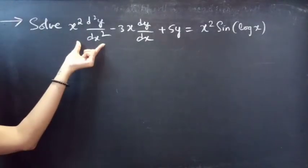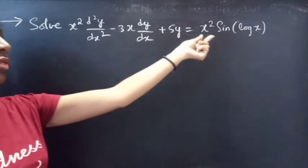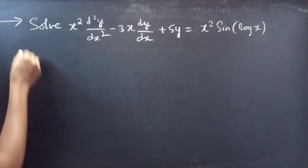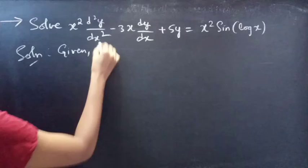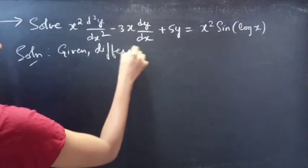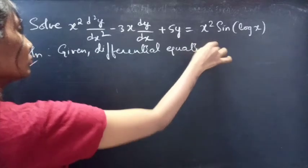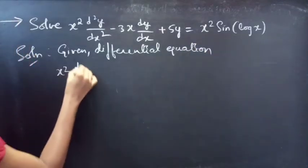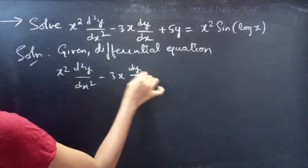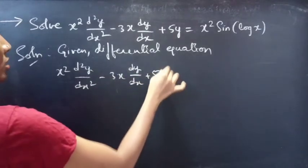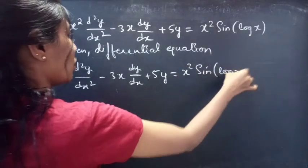Problem. Solve: x squared d²y/dx² minus 3x dy/dx plus 5y equals x squared sine of log x. This is the given differential equation.